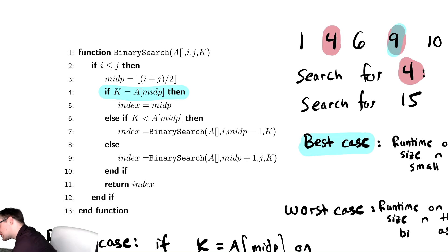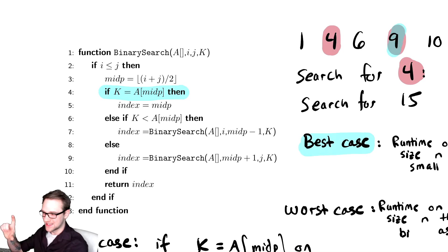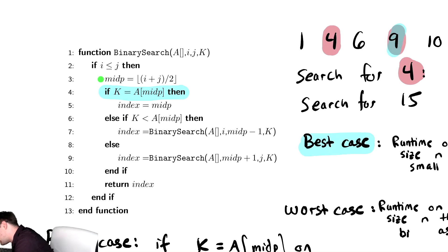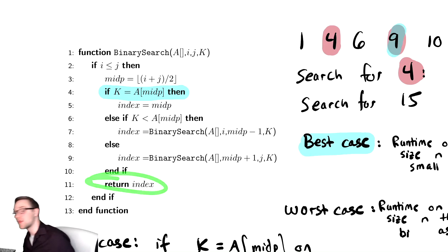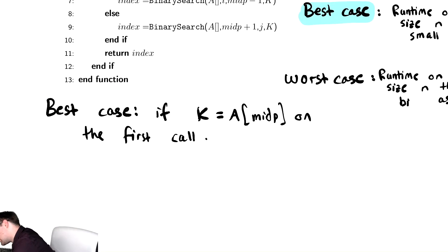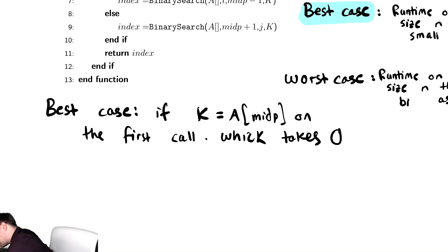In that case, we find the midpoint, which takes constant time; we do a comparison, which takes constant time; we assign the index, which takes constant time; then we return the index — everything is constant time. So the best case runtime is theta(1).